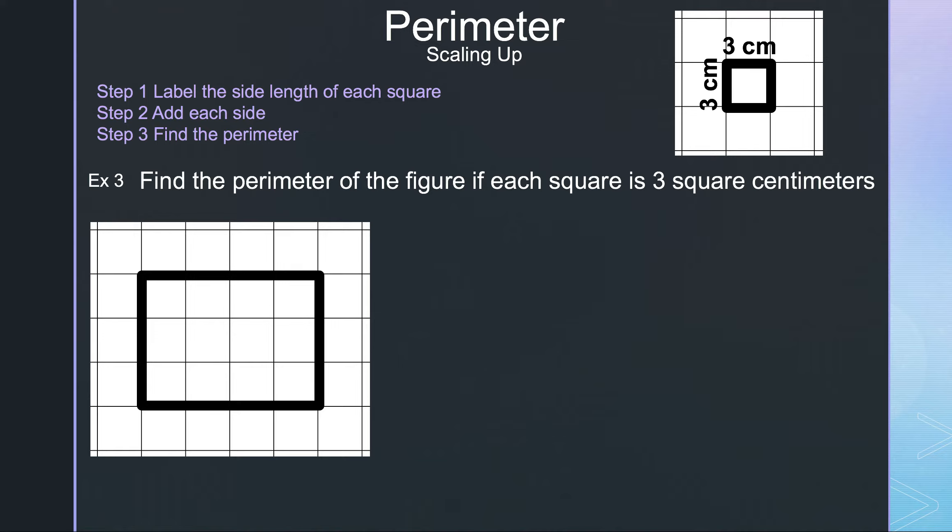As you can see on the top right of your screen, each square on the grid is 3 centimeters for the length. So instead of writing 2 like the previous two examples, we're going to write 3.